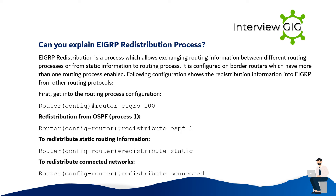First, get into the routing process configuration: Router# router eigrp 100. Redistribution from OSPF: Router# redistribute ospf 1. To redistribute static routing information: Router# redistribute static. To redistribute connected networks: Router# redistribute connected.